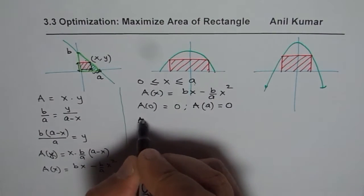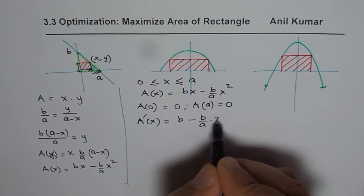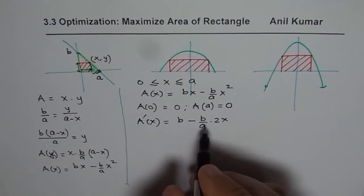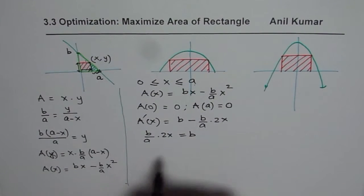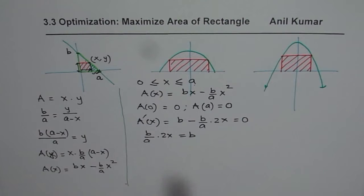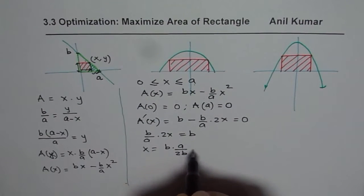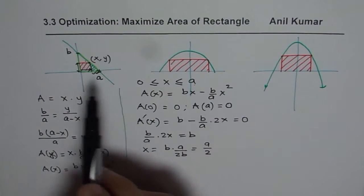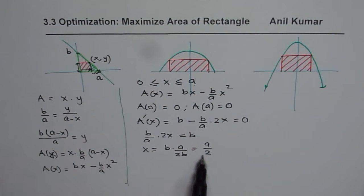Let's find the critical number. The derivative of area is A'(x) = b − (b/a)·2x. Setting this equal to zero: (b/a)·2x = b, so x = b·a / 2b = a/2. That means the optimal x is half of the x-intercept. Whenever there is a line and you are looking in quadrant 1 for the maximum area of a rectangle, you will get x = a/2.